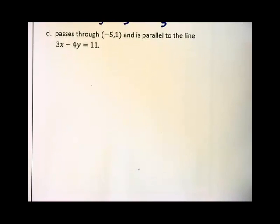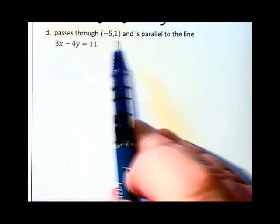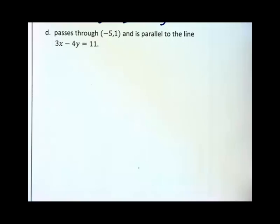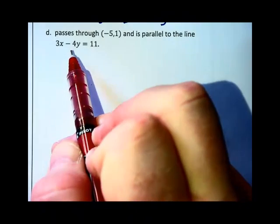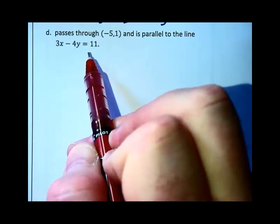In the next problem pattern problem D. The line passes through this point and the line is parallel to this given line. You need to find the slope of this line that it's parallel to. And we're going to find the slope by taking the standard form and converting it into slope intercept form.